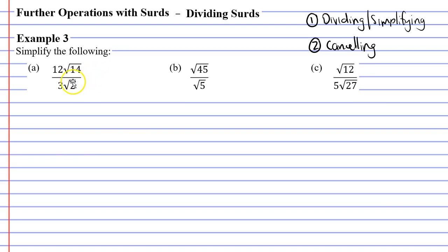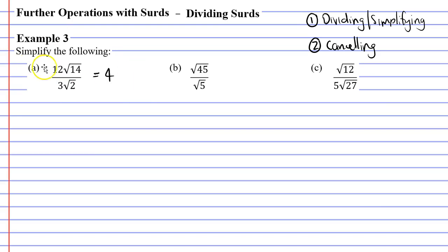On this slide you only see three questions, but we're actually completing six — there are another three on the next slide. Starting with question A, I'm going to use the first method and divide whole numbers separately from the surds. So 12 divided by 3 is 4, and root 14 divided by root 2 is the square root of 7, giving us 4 root 7.